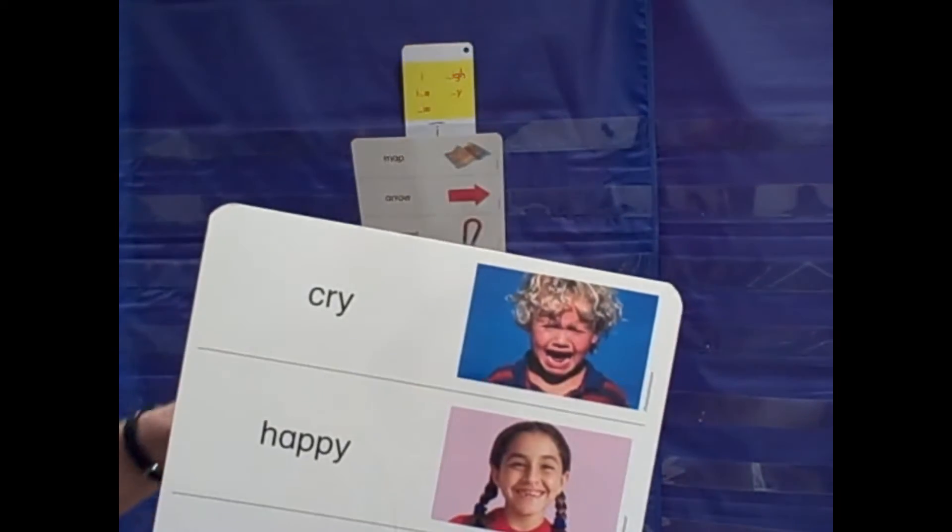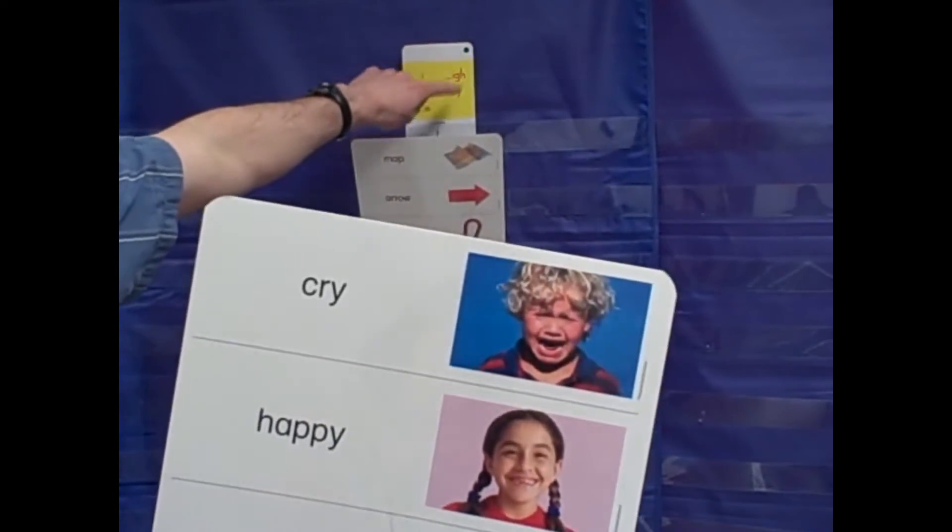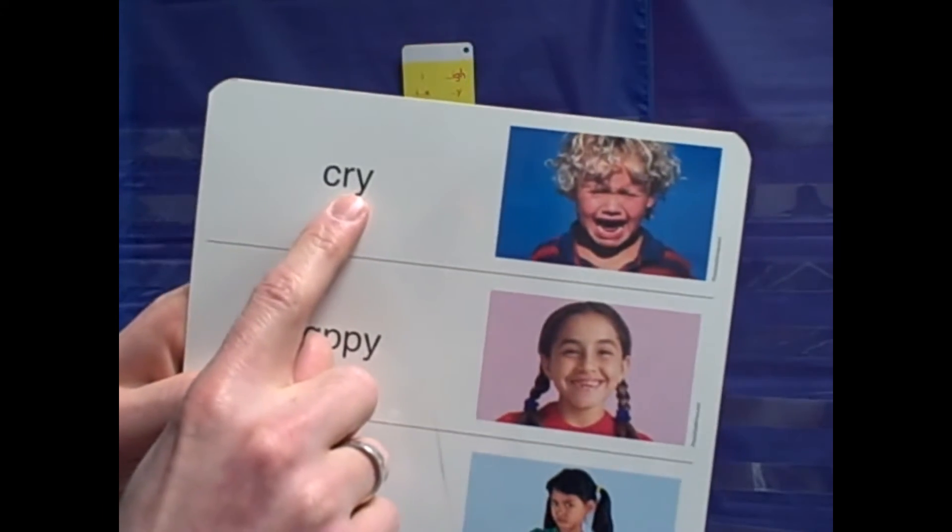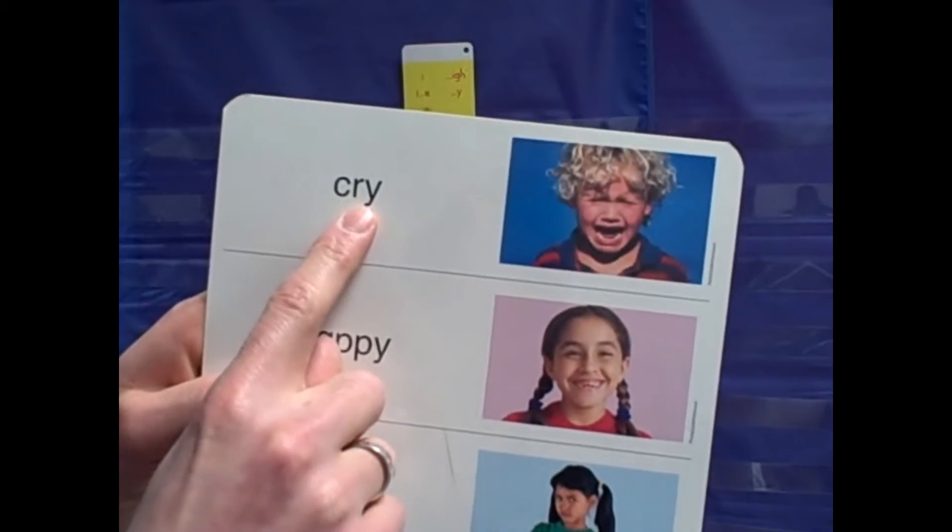The picture I use for the last spelling of I that I will show you today is cry. Y at the end of a one-syllable word says I, cry.